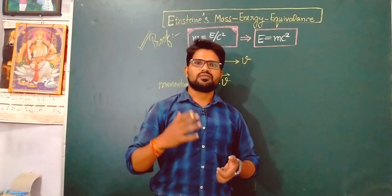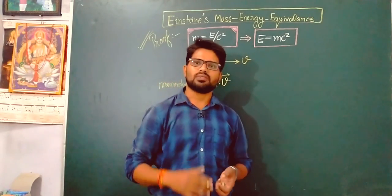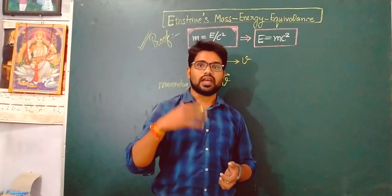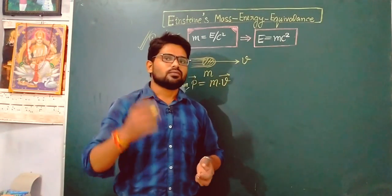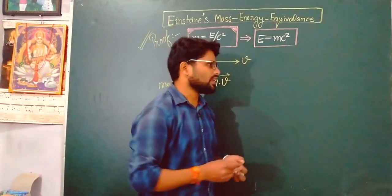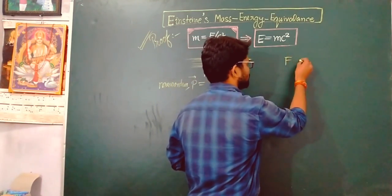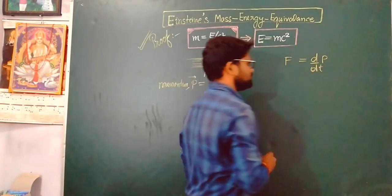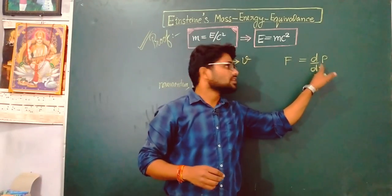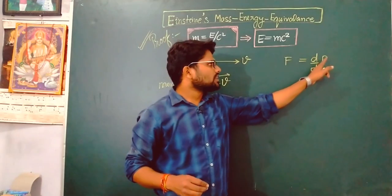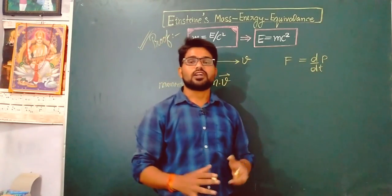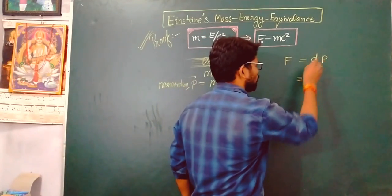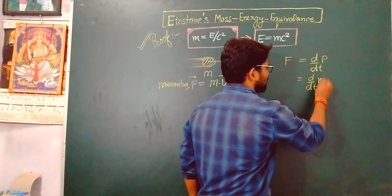Consider that a force F is acting on the object in the direction of its motion. Applying Newton's second law of motion: force is given as the rate of change of linear momentum, that is F equals d/dt of P. Differentiation of momentum with respect to time gives the value of the force, so we put the value of momentum: F equals d/dt of (mv).